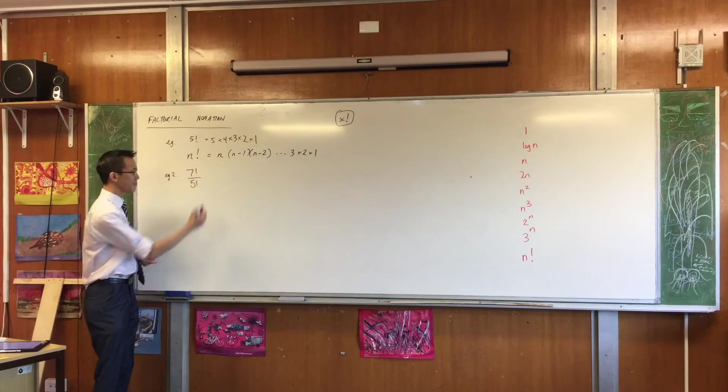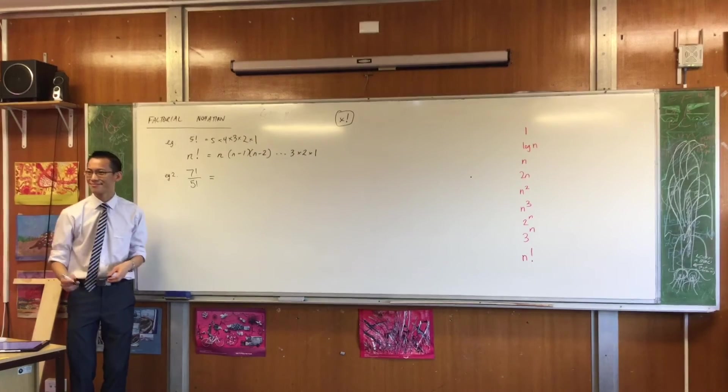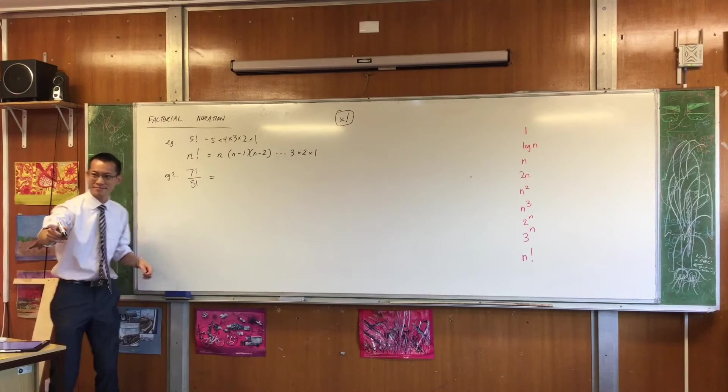What do you reckon, boys? Because you can cancel out all the 5 times 4 times 3, and then you get 7 times 5 times 6. Perfect.